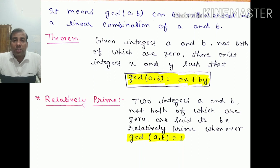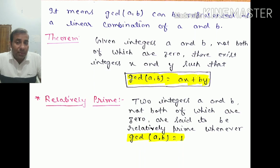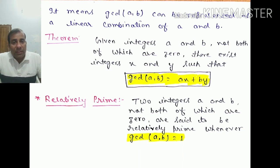The next important term is relatively prime. Two integers A and B, not both zero, are said to be relatively prime if their GCD equals 1. For example, GCD(5, 7): the positive divisors of 5 are 1 and 5, and the positive divisors of 7 are 1 and 7. The only common divisor is 1, so GCD(5, 7) equals 1, and therefore 5 and 7 are relatively prime.